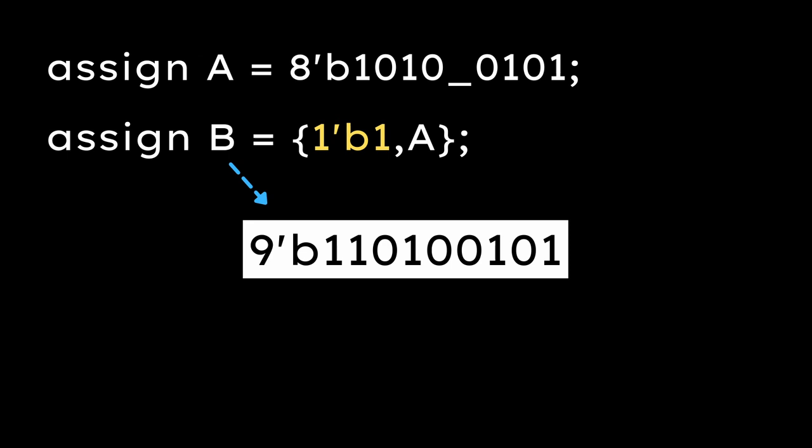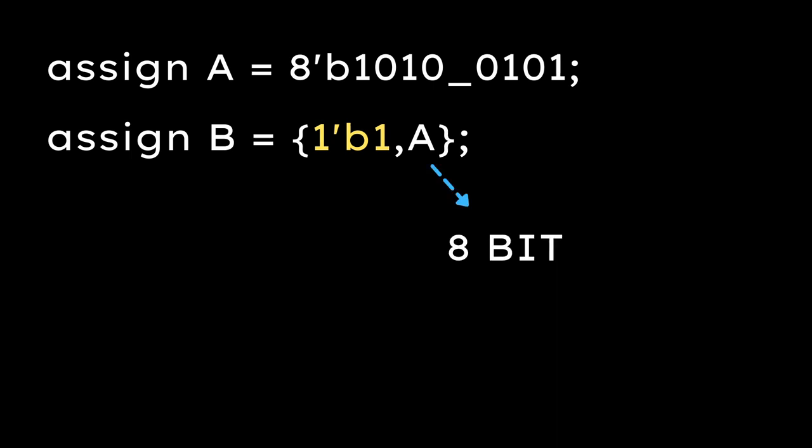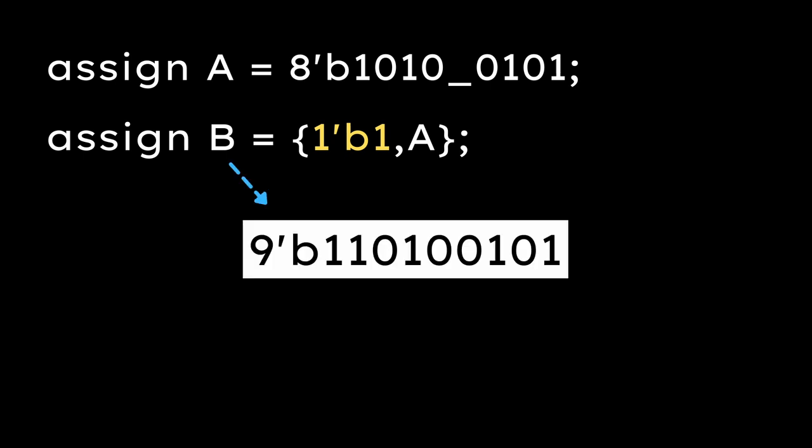Output of concatenation is 9'b1, 1 will be from 1'b1 and rest of the value is of A. In this concatenation, A is 8 bits and 1'b1 is 1 bit wide and B is 9 bit wide. So, the sizes matches and there is no issue.